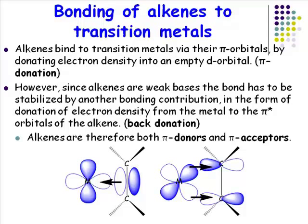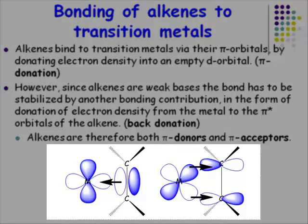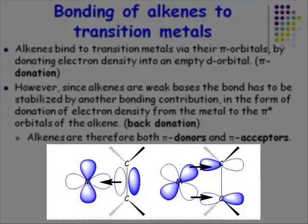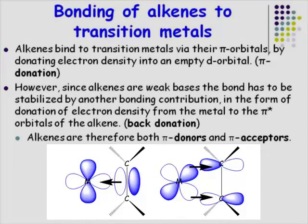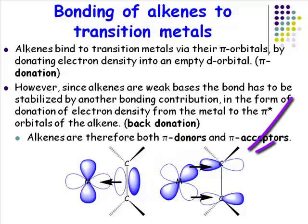If an alkene ligand is both a donor and an acceptor, we need to work out which orbitals are involved in donation and which are involved in accepting. The interesting orbitals on an alkene ligand are the pi orbital and the pi star orbital.